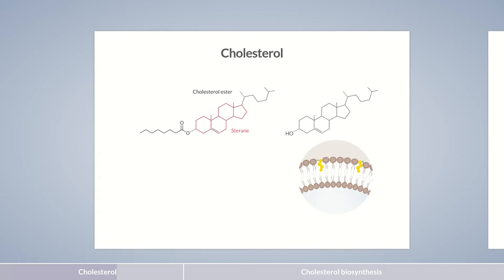Cholesterol is an elementary component of almost all biological membranes. Here, the polar hydroxyl group is positioned outward, while the non-polar sterol skeleton extends into the lipid bilayer. The incorporation of cholesterol makes the membranes more stable and fluid. At high temperatures, its rigid structure restricts lipid mobility. At low temperatures, it prevents the lipids from packing closely together, thereby increasing membrane rigidity.